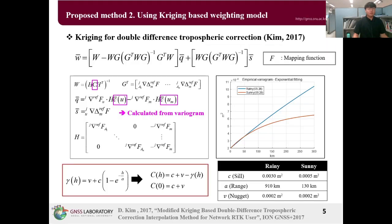For a detailed explanation of the kriging-based weighting model, please refer to the previous study. The weightings for combining Melbourne-Wübbena corrections are calculated and used by considering the variogram according to the weather conditions.